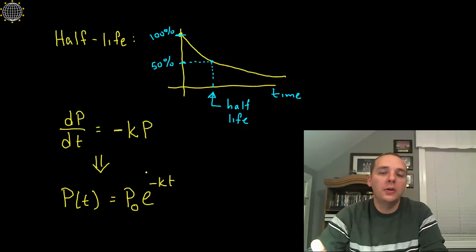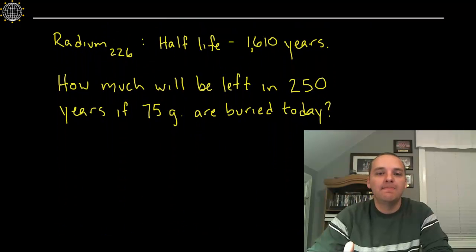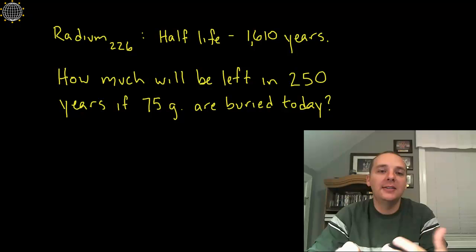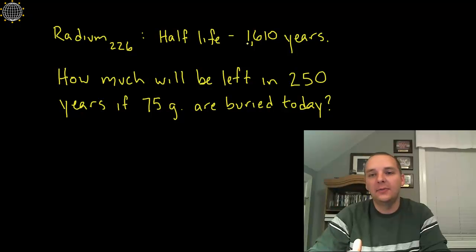Now what are some typical questions you'll be asked? Here's a very typical example. They'll give you an isotope, and I actually looked this up online right before I started this video. They will say what the half-life of this radioactive isotope is. Radium-226 is a popular isotope who has a half-life of about 1600 years. One of the resources I found said 1610, another said 1590, but we'll go with 1610.